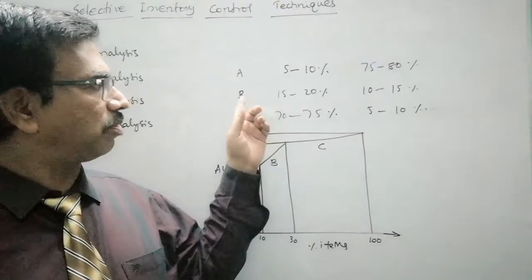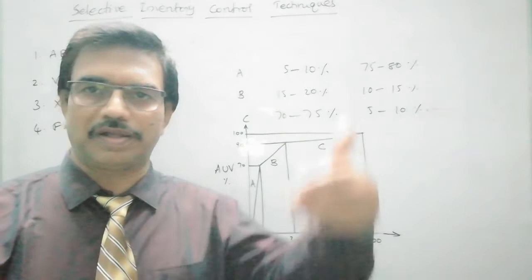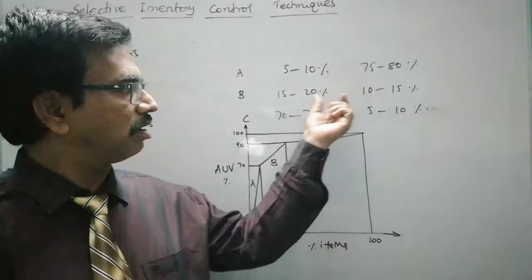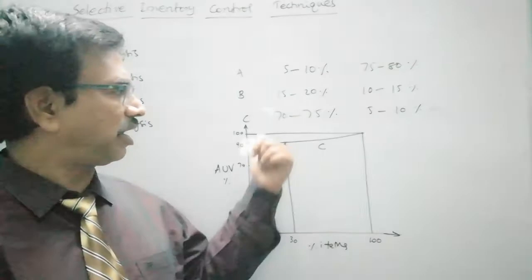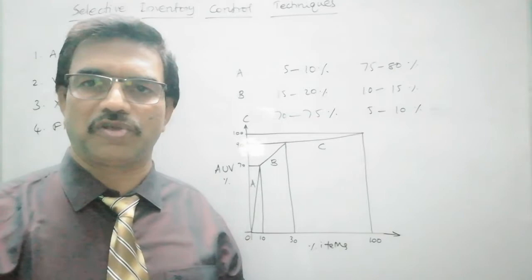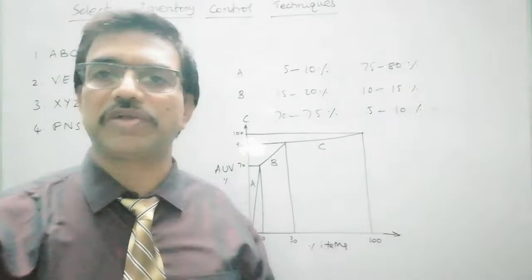Similarly, coming to Class B items, 15 to 20 percent of the total number of items in the inventory list will contribute 10 to 15 percent of the total annual usage value. These are Class B items. And all remaining items — that is 70 to 75 percent of the count — found in any store are Class C items, with annual usage value of only 5 to 10 percent.